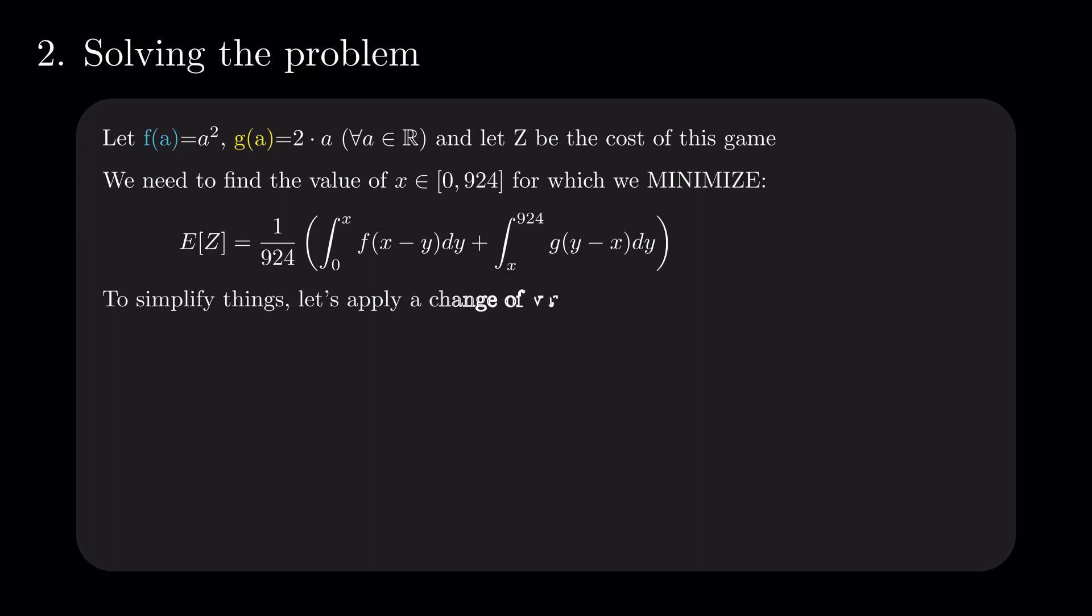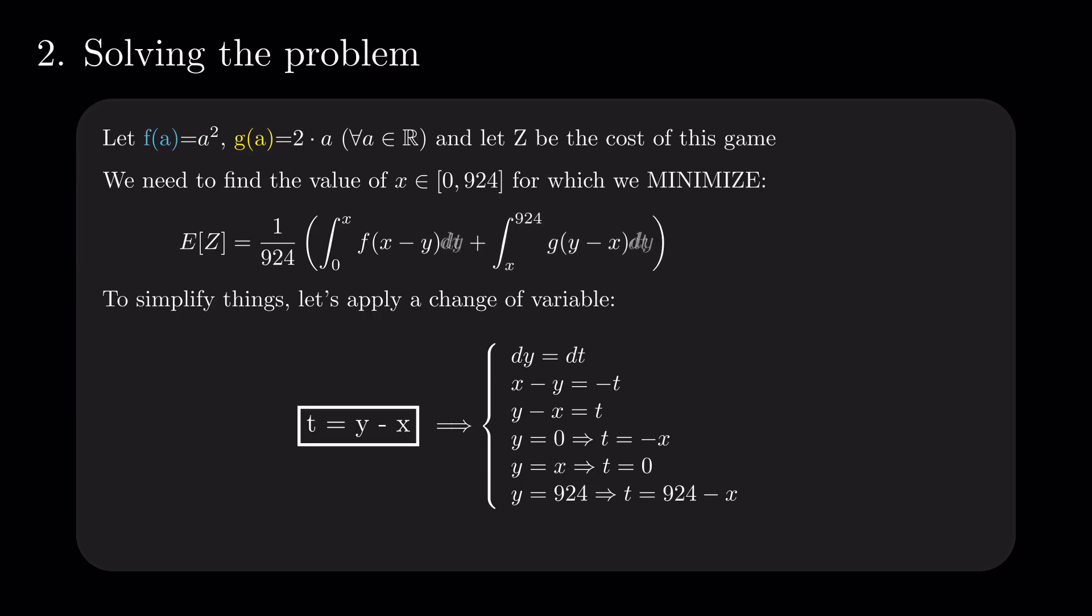To simplify things, let's apply a change of variable substituting y minus x by t. This implies the following changes. Dy equals dt, and the new limits of the integrals are minus x and 0, and 0 and 924 minus x, respectively.